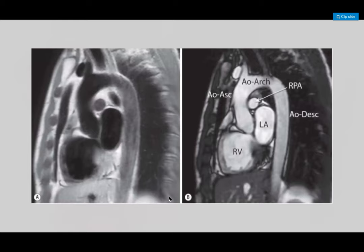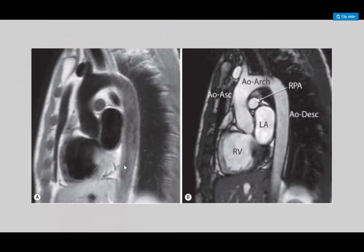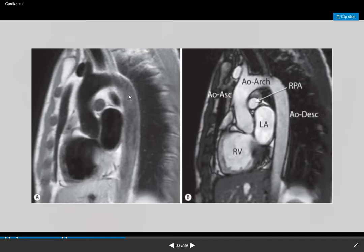Anatomy is very important. One key view is the sagittal view — some people call it the candy cane view because the aorta looks like a candy. This view is really good for looking at any dilatations or enlargements of the aorta. We usually get it initially just to find where the heart is and identify any structural abnormalities, including the right ventricle, left atrium, and right pulmonary artery.